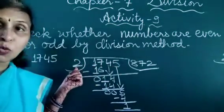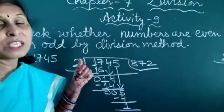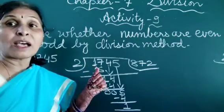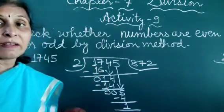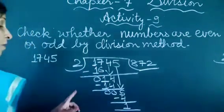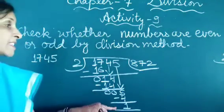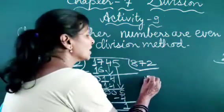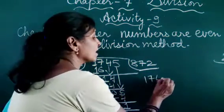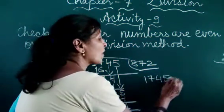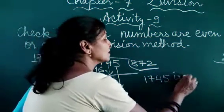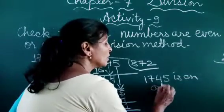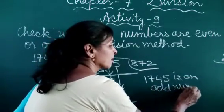When we divide 1745 by 2, we get 1 as the remainder. Thus 1745 is an odd number.